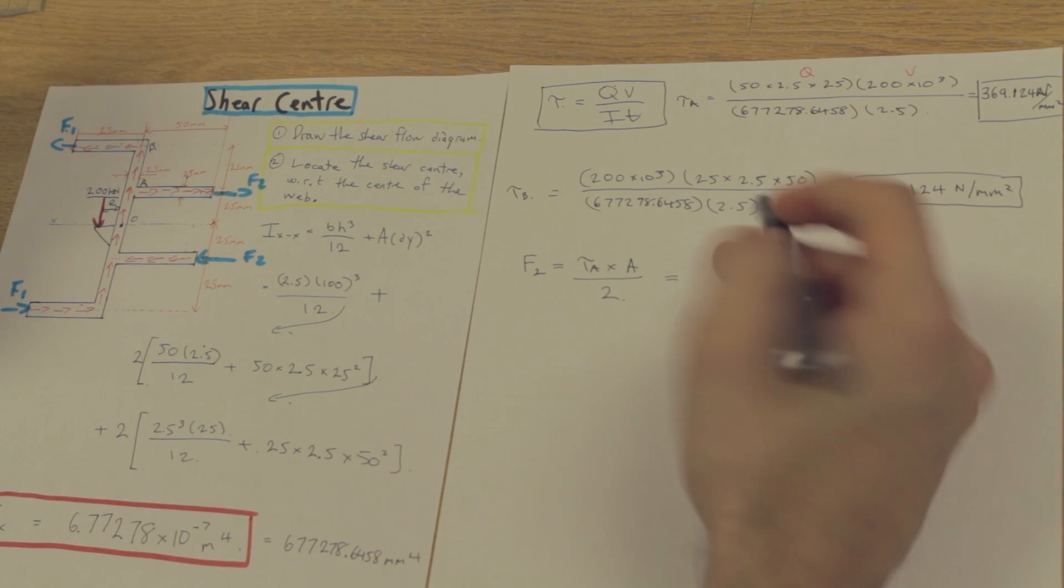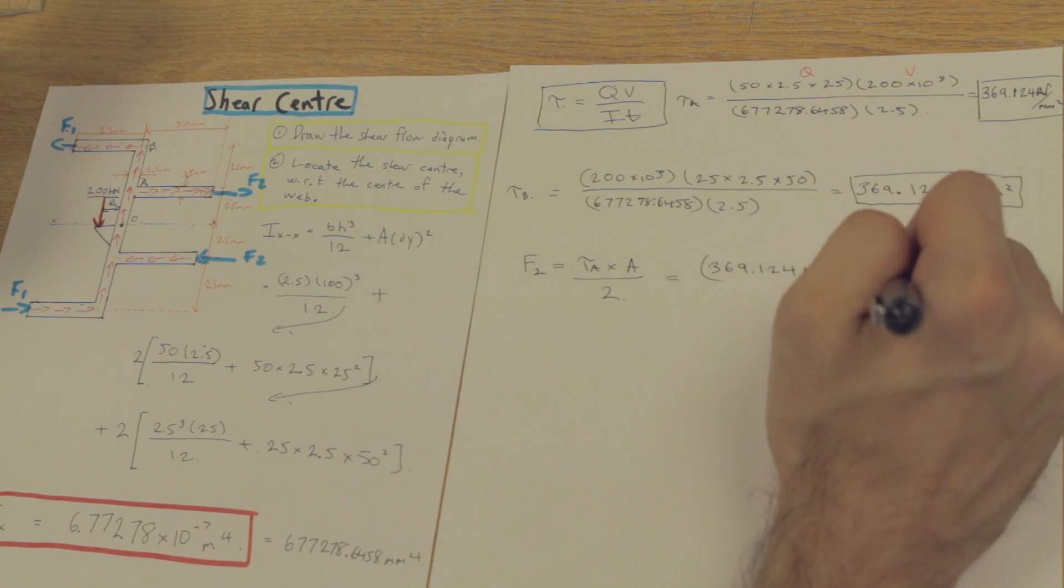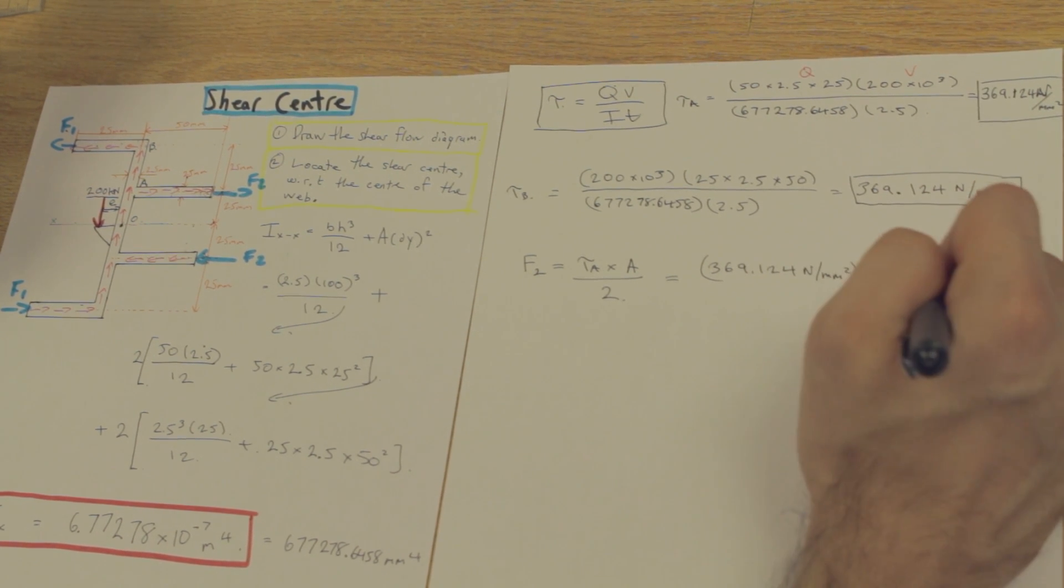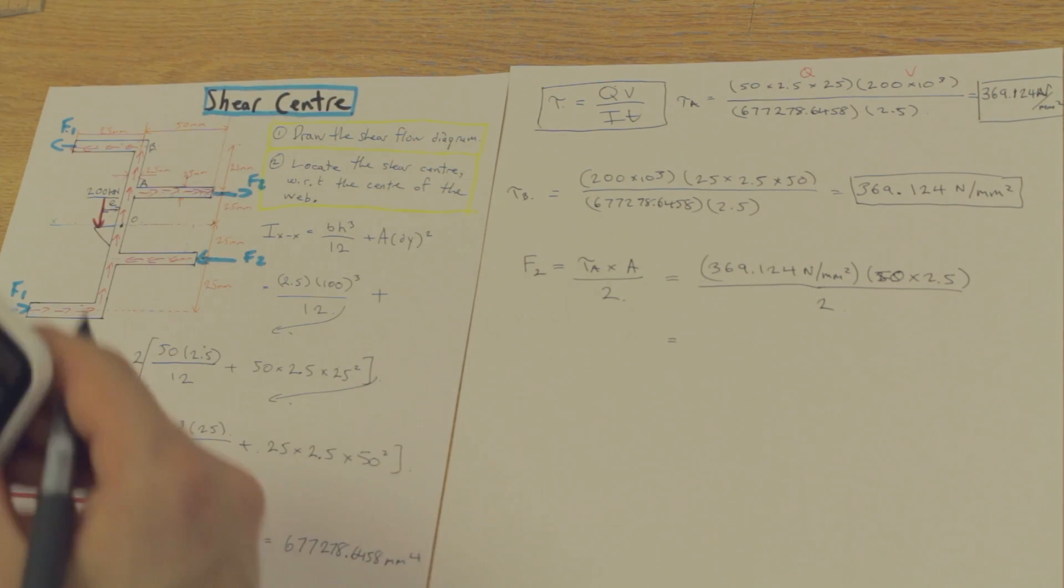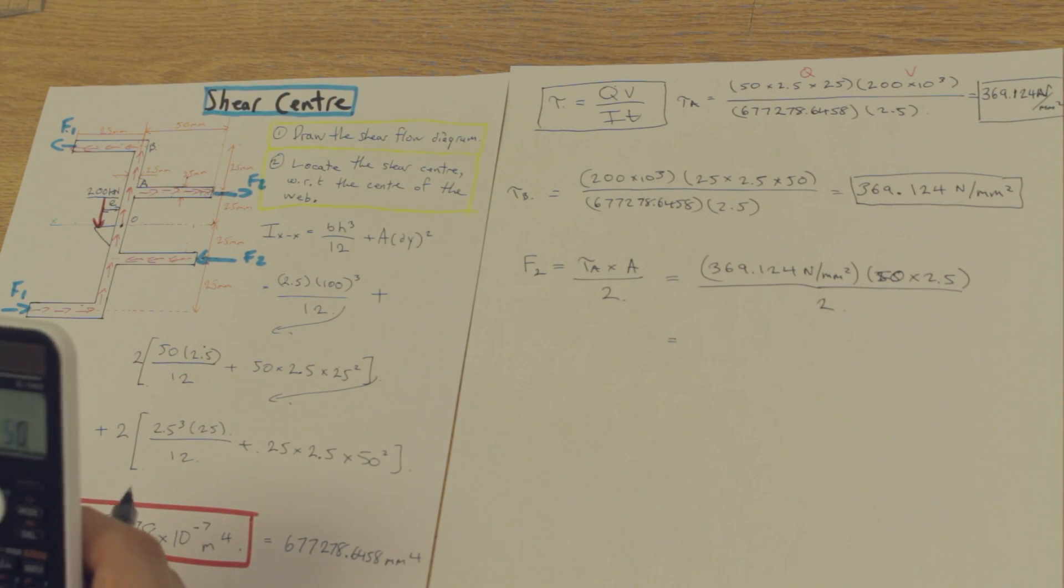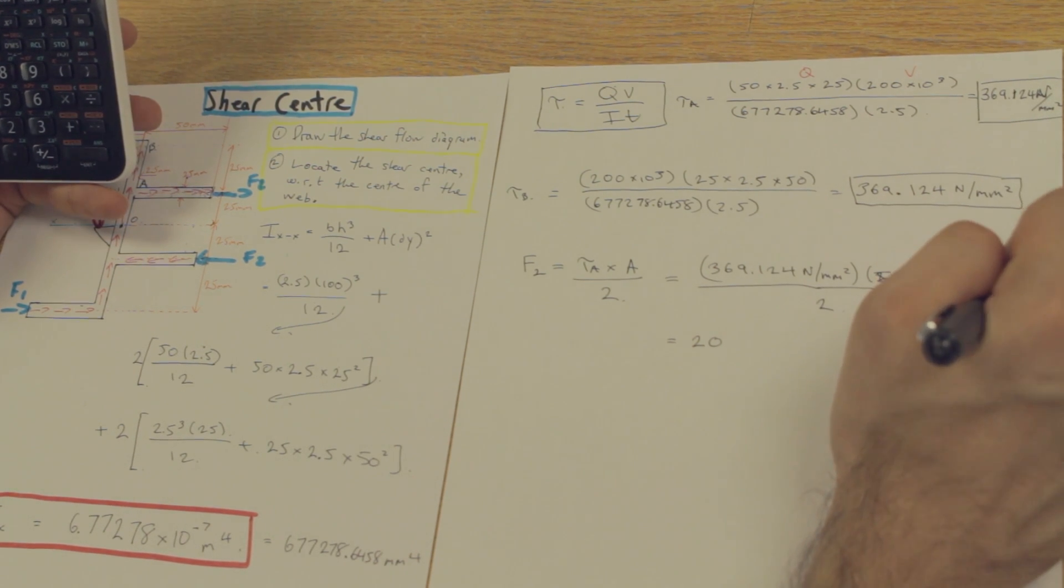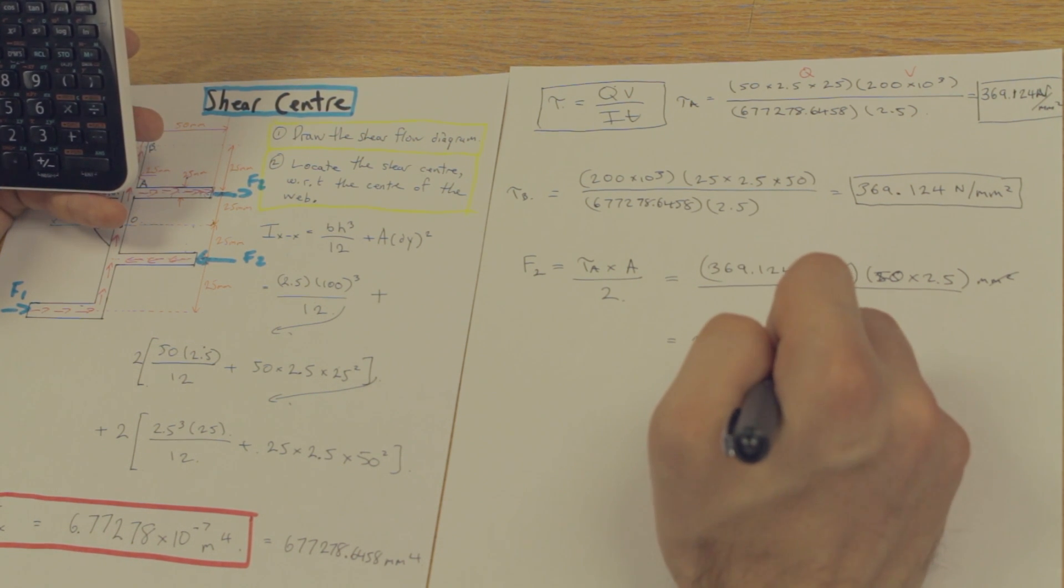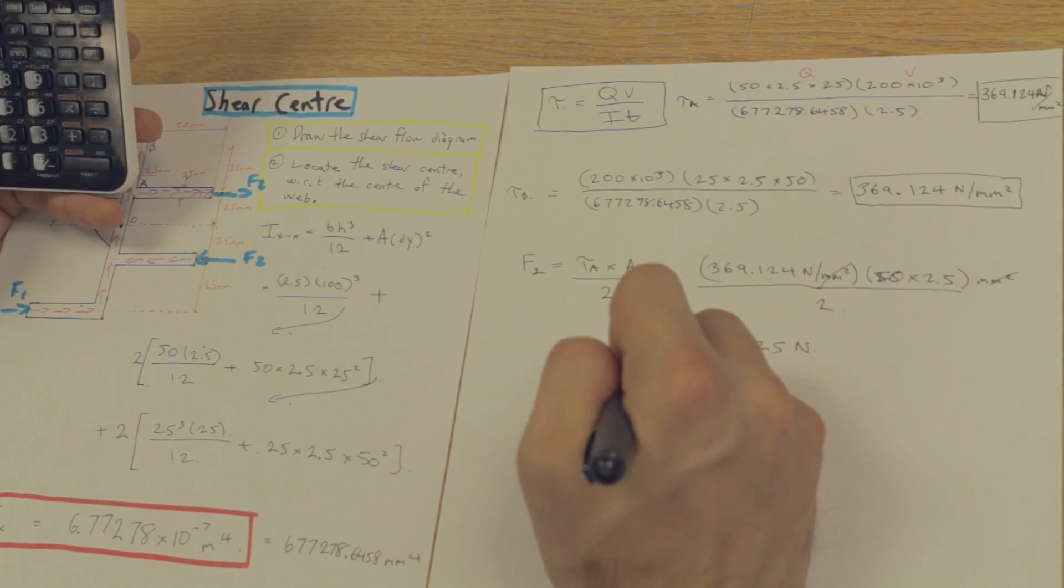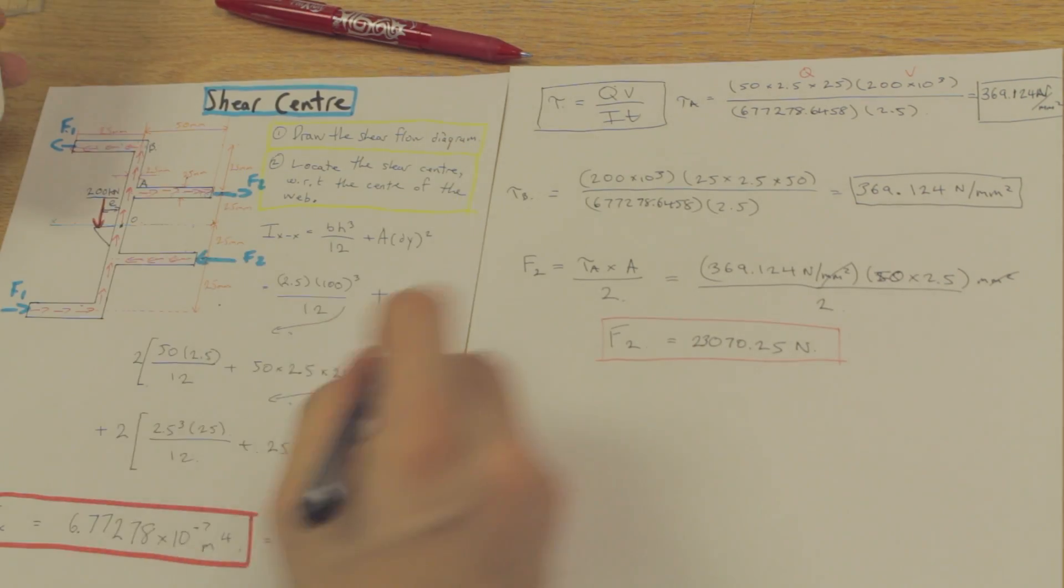Plug this in. We have tau A, which is 369.124. We have an area here of 50 times 2.5. And we're going to divide that by 2. And what are we going to get? We're going to end up with, and as we see here, we have millimeters squared units. Those are going to cancel, and this value that we get is going to be in newtons. So, F2 is equal to 23,070.25 newtons, and that's this force here.